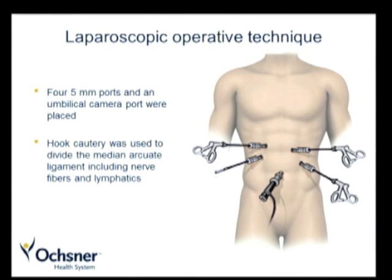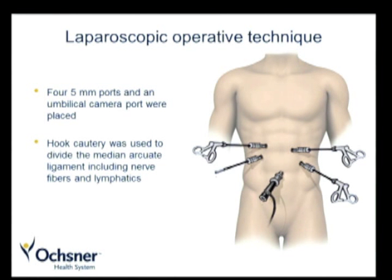In terms of the laparoscopic operative technique, we utilized five ports: an umbilical camera port and four 5-millimeter ports. One port was used for the liver retractor, two were operative ports, and one was an assistant port. After placing the liver retractor, the lesser sac was entered using hook cautery, the esophagus was retracted laterally, and the ligament was divided along the aorta down to the celiac artery using hook cautery.